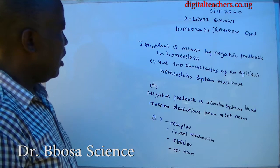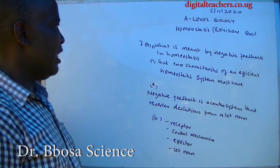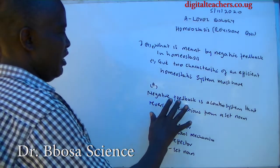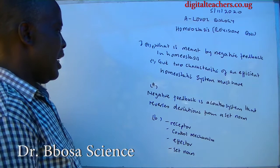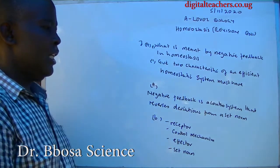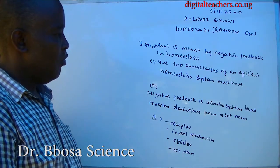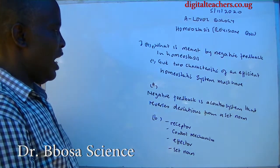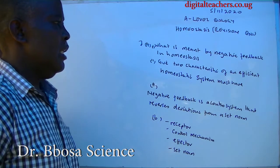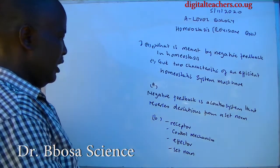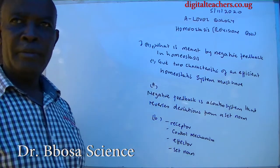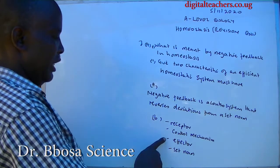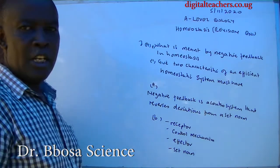Number seven A: what is meant by negative feedback in homeostasis? A negative feedback is a control system that reverses deviations from a set norm. Number seven: give two characteristics an efficient homeostatic system must have. It must have a receptor, a control mechanism, an effector, and a set norm.